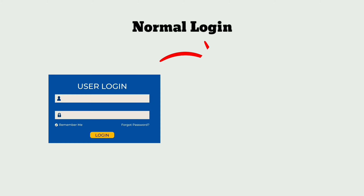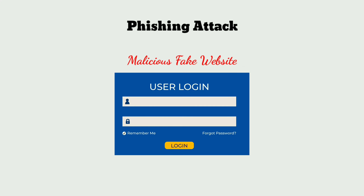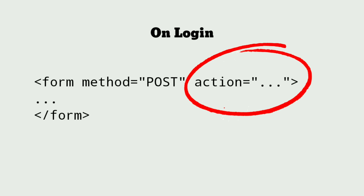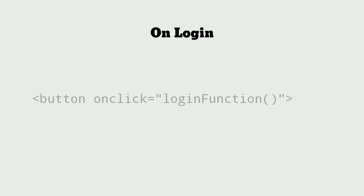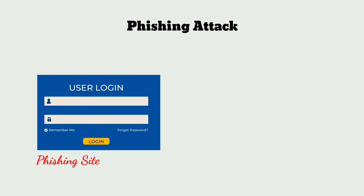Let me show you how it works. Normally, when you try to login to your account, your browser will send a POST request to the server. The server analyzes the request and responds back with the corresponding data. Your browser then processes the response and displays the information to you. But in case of a phishing attack, the hacker would create a malicious website that looks exactly like the authenticated website. Whenever someone submits a login form, two things can possibly happen: either your browser will send a POST request to the link mentioned in the action attribute of the login form, or a function is called which is mentioned in the button's onClick attribute.